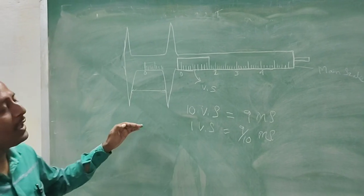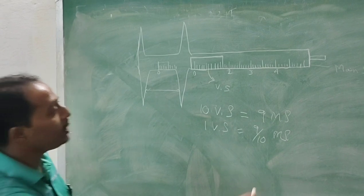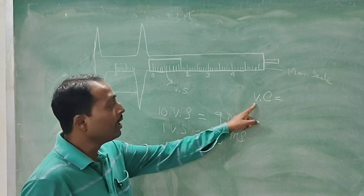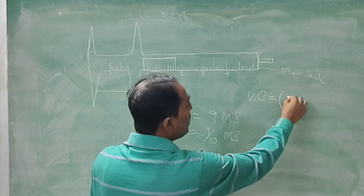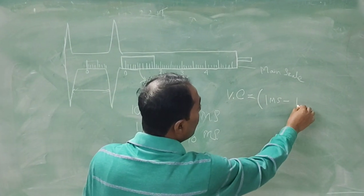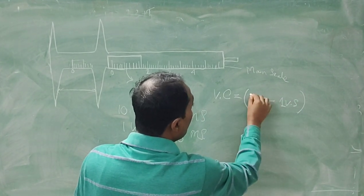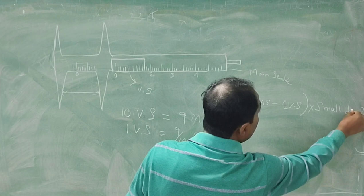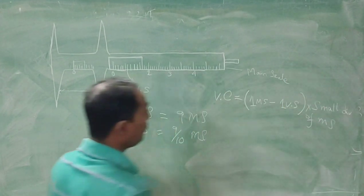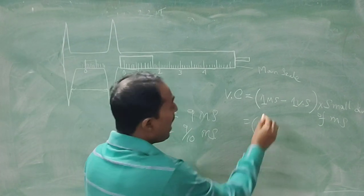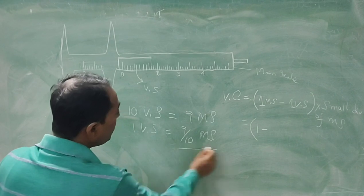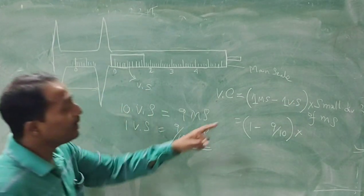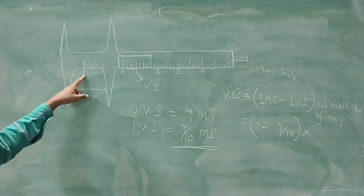Now first we have to calculate the Vernier constant of this Vernier caliper. The Vernier constant, abbreviated VC, is calculated using the formula: 1 main scale division minus 1 Vernier scale division. So the Vernier constant equals the smallest division of the main scale, multiplied by that difference.